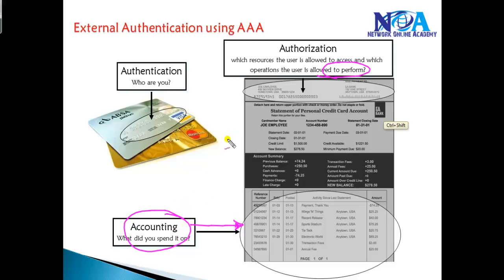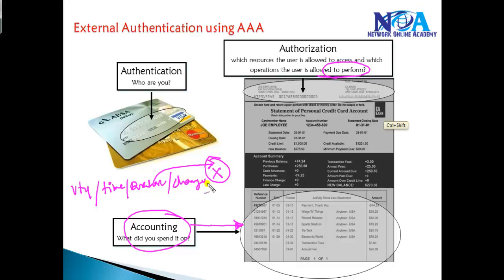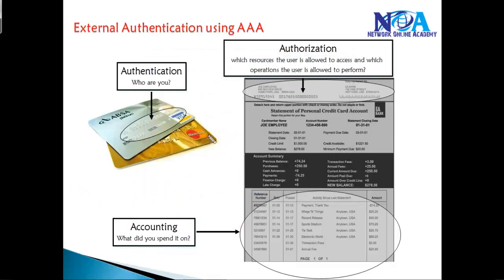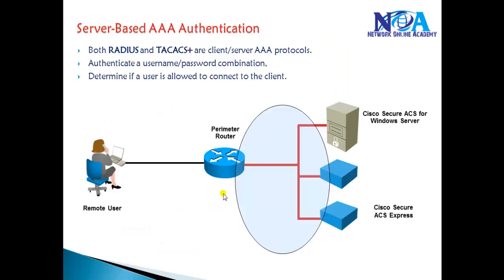Accounting keeps track of everything that happens — if a user logs into the device via VTY line or console line, it records which line was used, the time of access, how long the session lasted, and what commands were issued. So AAA provides three options: authenticating whether the user is valid, authorizing what the user can and cannot do, and accounting by keeping track of all events and actions performed. This is all handled by the external server.